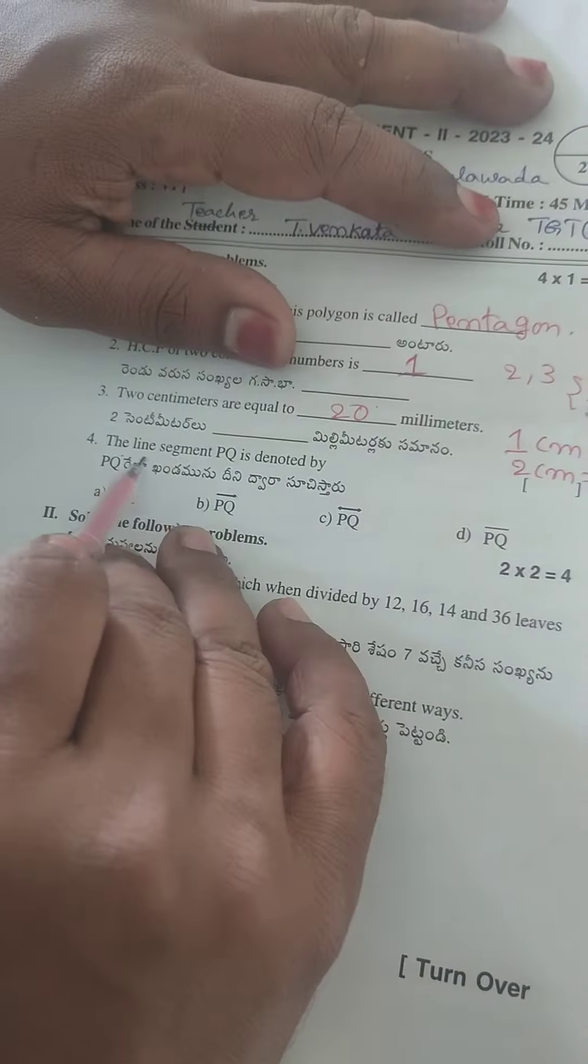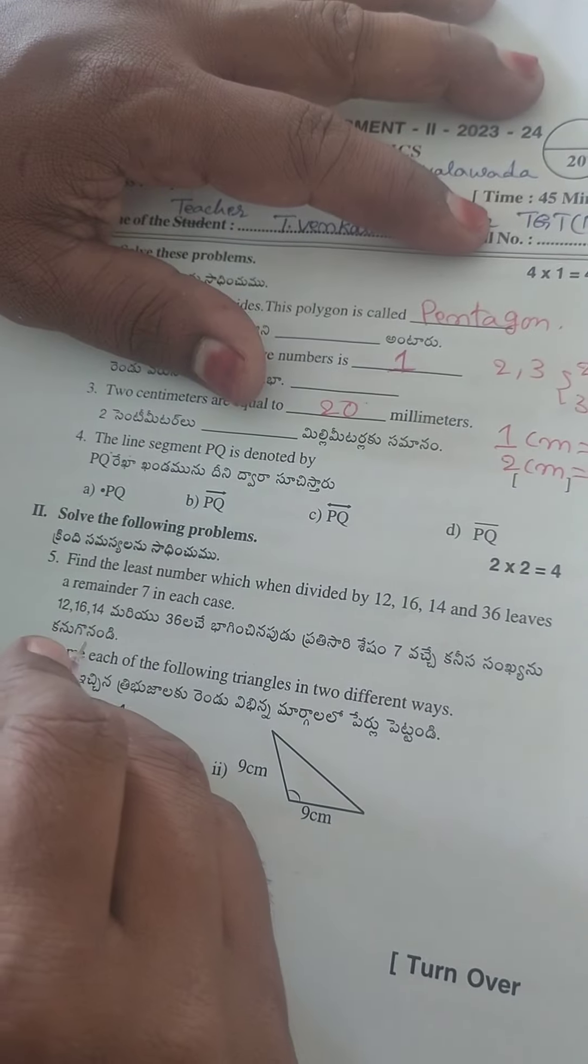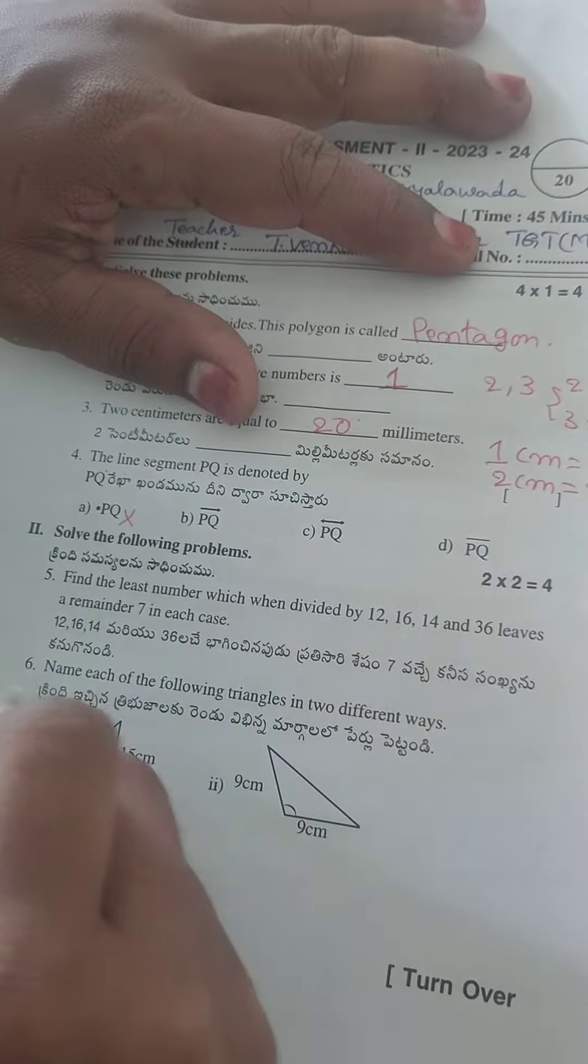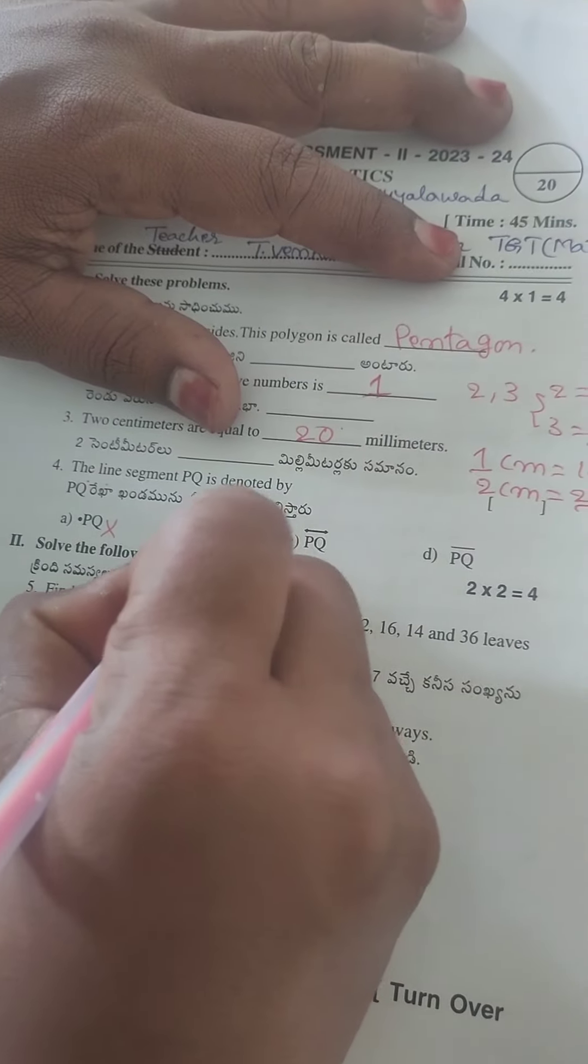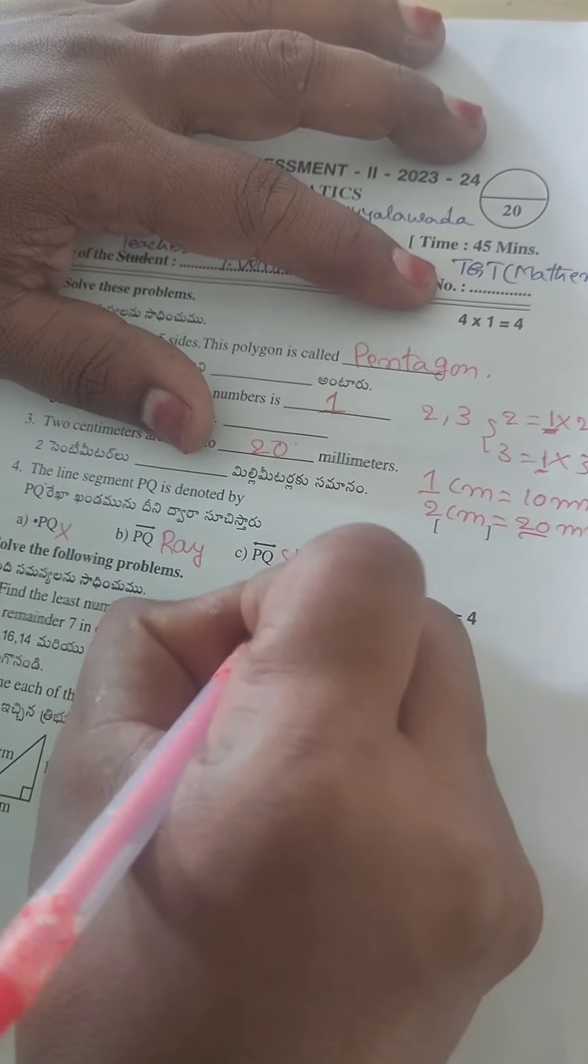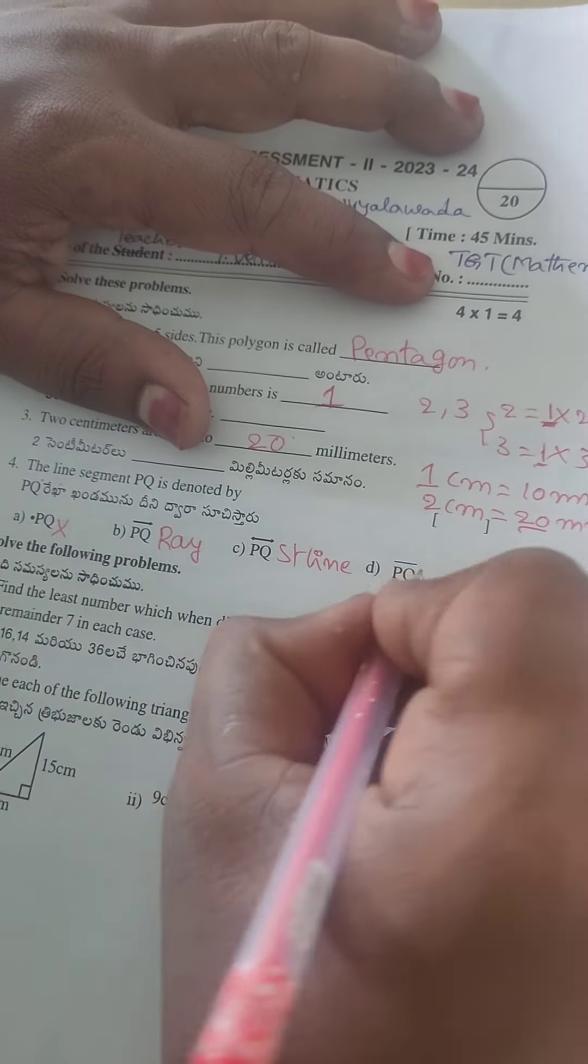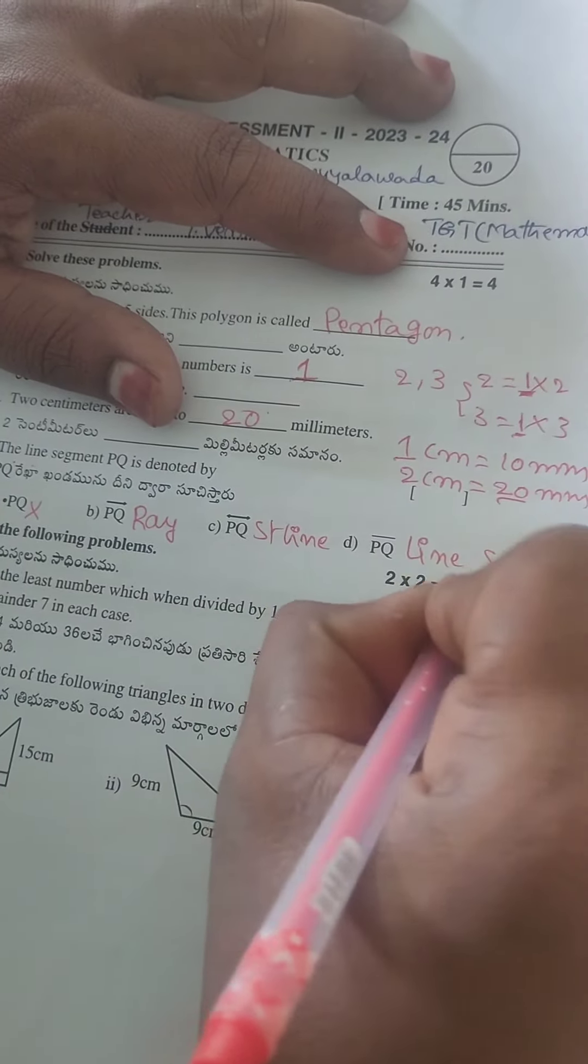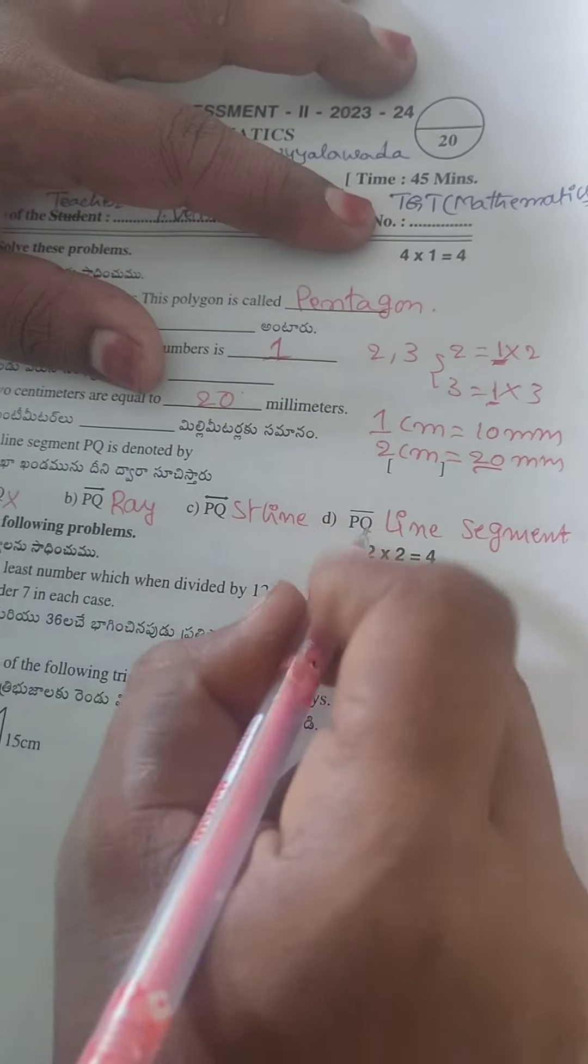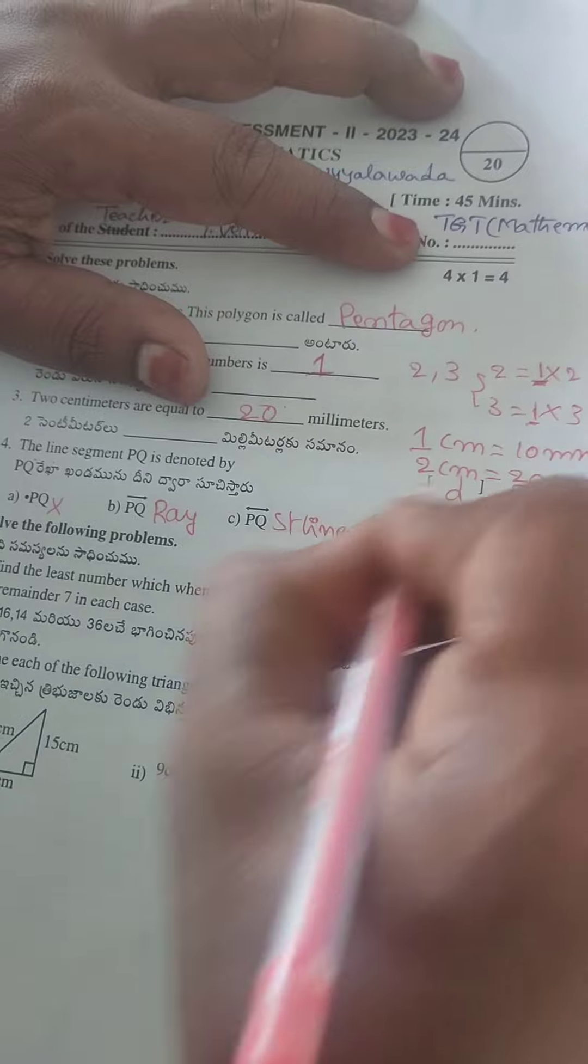The line segment PQ is denoted by dash. This is a point PQ - this is not correct answer. This is ray of PQ. This is straight line of PQ. So this is line segment. Which one is correct answer? D. So D is correct answer.